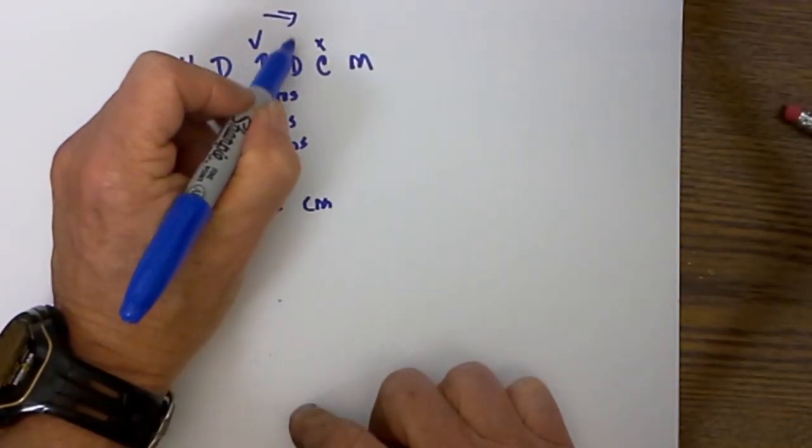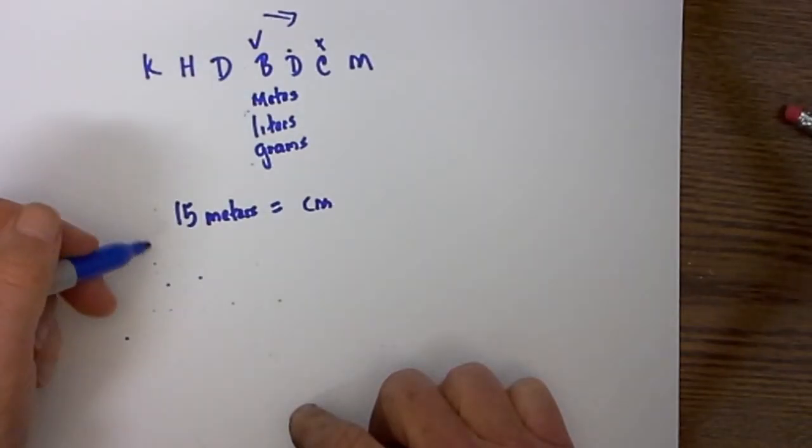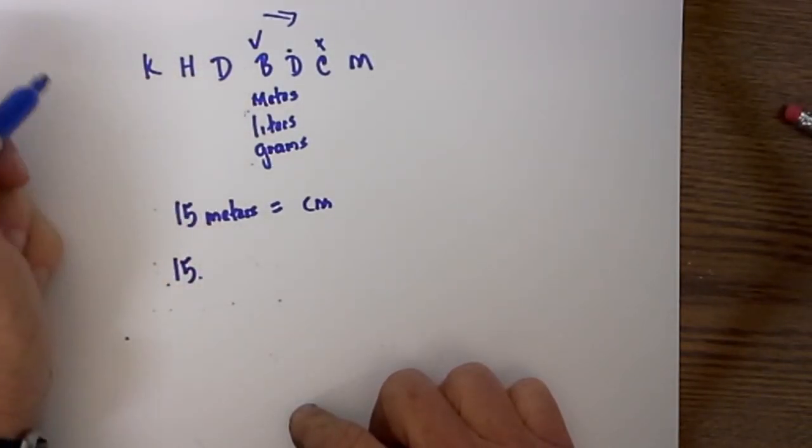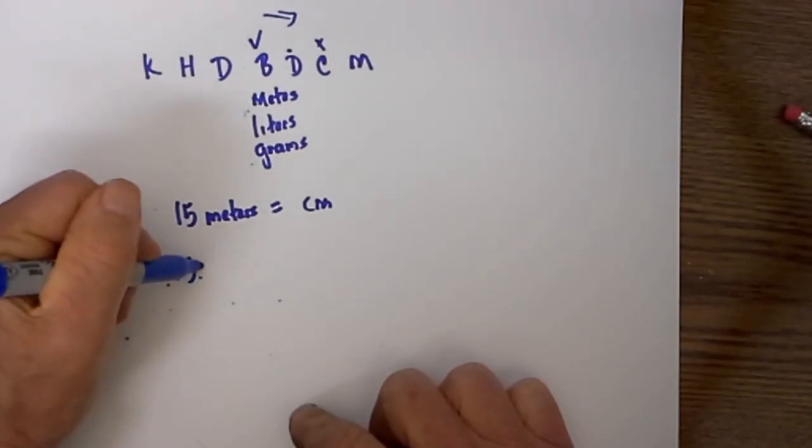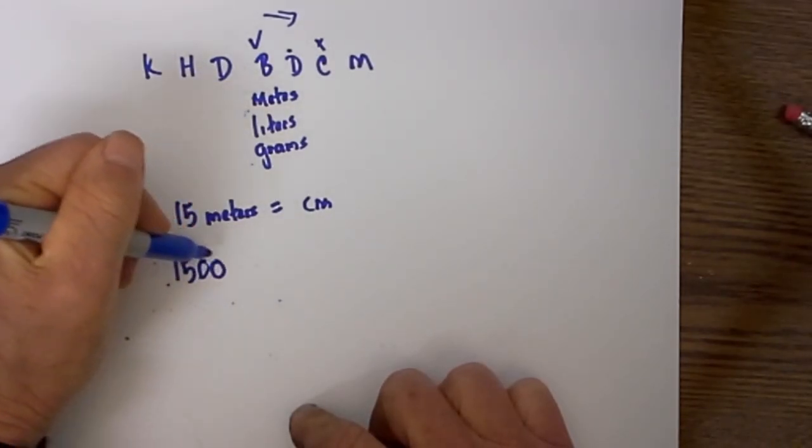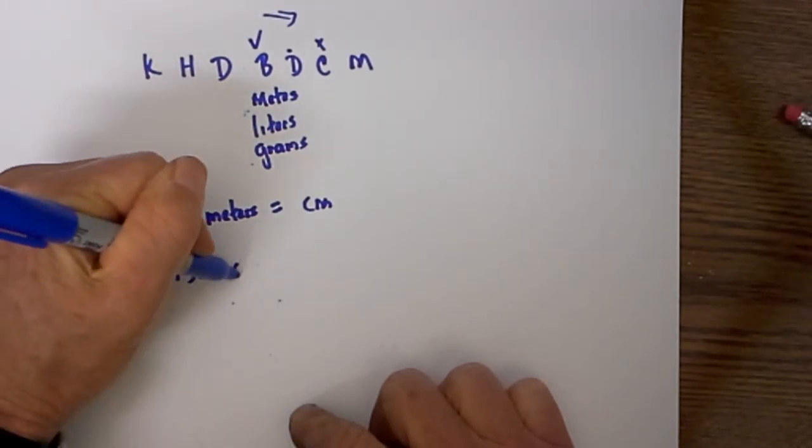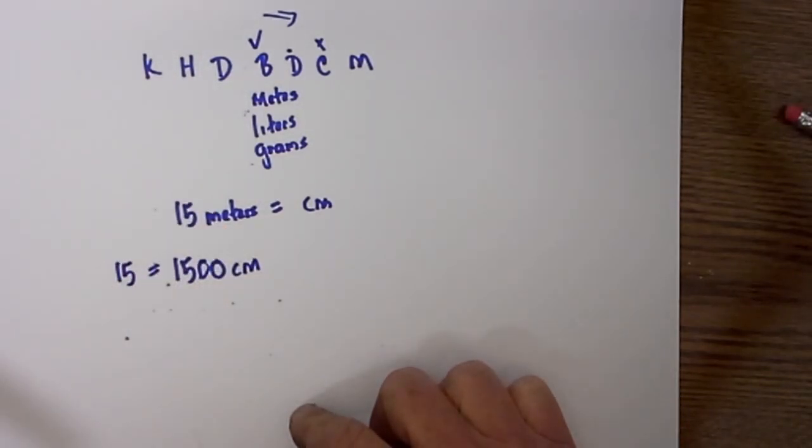I am moving 1, 2 places to the right so I will go 15 meters, if you do not see a decimal point it is at the far right. I will add 2 zeros so 15 meters is equal to 1500 centimeters.